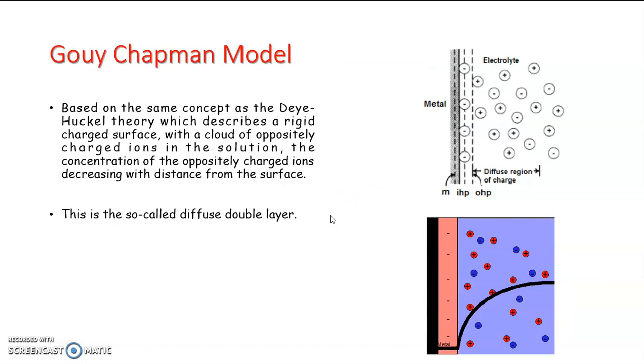The second model, termed as Gouy-Chapman model, involves a diffused double layer which extends to some distance from metal surface. It involves the counter ions and the solvent system. It was based on Debye-Hückel theory which describes a rigid charged surface with a cloud of oppositely charged ions in solution whose concentration decreases with distance from the surface. This theory considers the whole charges in solution, providing better reality than Helmholtz but has limited quantitative application.